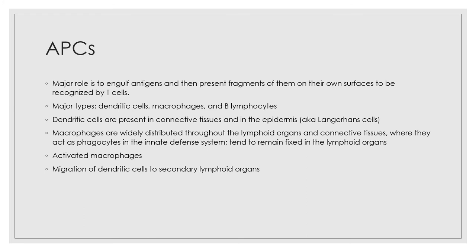To summarize, the adaptive immune system is a two-fisted defensive system with a humoral arm and a cellular arm. It uses lymphocytes, APCs, and specific molecules to identify and destroy substances — both living and non-living — that are in the body but are not recognized as self. The immune system's ability to respond depends on its cells' ability to recognize foreign substances (antigens) and communicate with one another so the system as a whole can mount a response specific to those antigens.